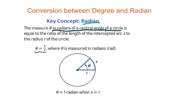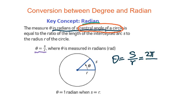S is an arc length and theta will be the central angle of a circle, and R will be the radius. From this definition, we know that theta equals S over R. We know the circumference of a circle is 2 pi R.